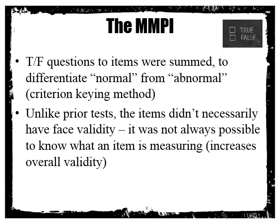Essentially, the MMPI takes a bunch of items — 12 to 15 per subscale. Hypochondriasis has 12 to 15, depression has 12 to 15. You add up the totals on these true-false questions, and if you endorse the positive direction for most of those items, then you're more likely to fall in the abnormal range — looking more like the psychiatric group than the Minnesota Normals.